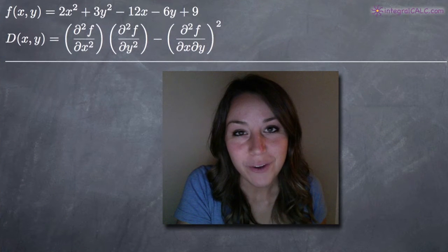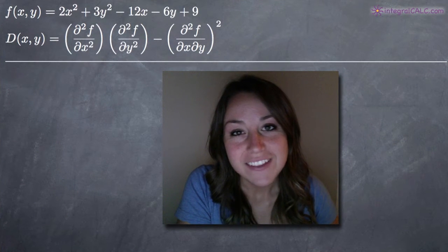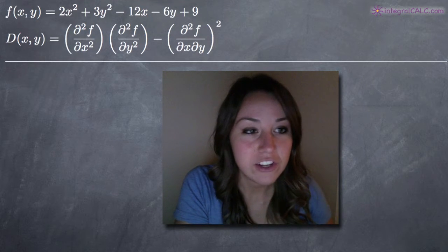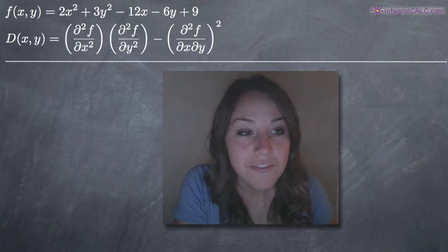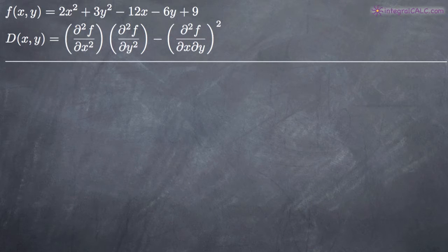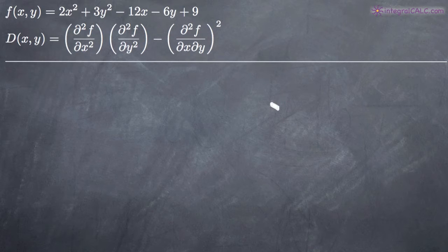Hi everyone. Welcome back to integralcalc.com. Today we're going to be talking about how to find global extrema in a function of two variables. We've got a function of the two variables x and y equal to 2x squared plus 3y squared minus 12x minus 6y plus 9, and we've been asked to find global extrema of this function if there are any.